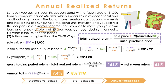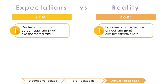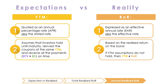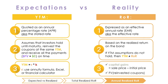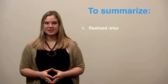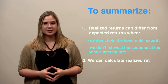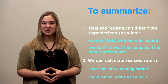Let's recap the differences between yield to maturity and rate of return. Yield to maturity is quoted as an APR, or stated rate, while ROR is quoted as an EAR, or effective rate. YTM assumes that the investor holds the investment until maturity and reinvests the coupons at the same rate as the bond. ROR is based on the realized return on the bond, which may differ when these assumptions do not hold. Lastly, we must solve for yield to maturity by taking R times K, where R is found by applying the present value of annuity formula using a spreadsheet or financial calculator, while rate of return can be calculated by hand from our capital gains and applying a future value annuity formula to our coupons. In this video, we learned that realized returns can differ from expected returns, and we can calculate the total realized return over the holding period or express it in annual terms as an ROR. Thanks for watching, and we'll see you next time!